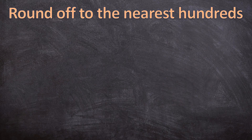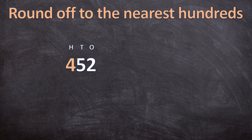Before we jump into decimal numbers, let's quickly review what we already know. When I have the number 452 and I ask you to round it off to the nearest hundreds, first you identify which digit is in the hundreds place value. The four is in the hundreds place value, so you know you're going to either round up to 500 or round down to 400. That depends on the digit in the place value to the right of the hundreds — the tens.